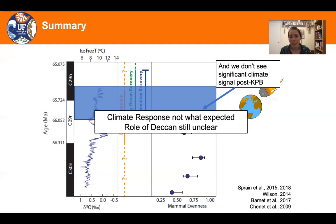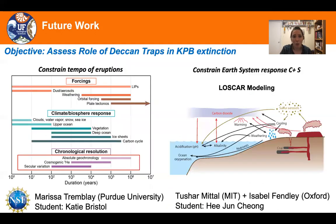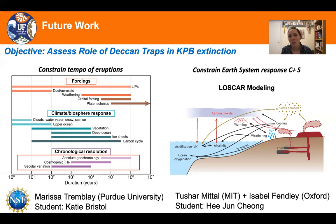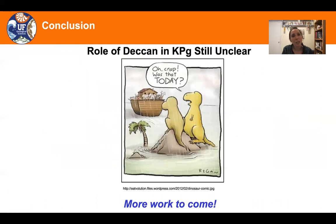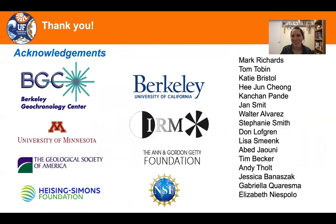The role of the Deccan is still unclear. My future work on this topic involves two ongoing projects: one constraining the tempo of eruptions, a recently funded NSF grant, and the other concerning the Earth system response of volatiles being released from large igneous province eruptions. In conclusion, the role of the Deccan Traps in the Cretaceous-Paleogene boundary mass extinction is still a little bit unclear, but there's going to be a lot more work to come. Please stay tuned, and thank you.